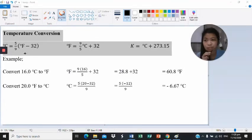Temperature conversion. We have units of measure: degree Celsius, degree Fahrenheit, and Kelvin. In converting degree Fahrenheit into degree Celsius, we have 5 over 9 multiplied to degree Fahrenheit minus 32. For degree Fahrenheit, we have 9 over 5 multiplied to degree Celsius plus 32. For Kelvin, we have degree Celsius plus 273.15.